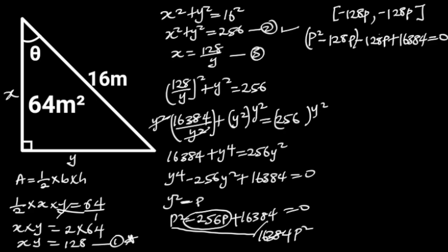Next, we factor out from the first bracket. p will factor out to leave us with p minus 128. From the second bracket, minus 128 will factor out to leave us with p minus 128, which is equal to 0.